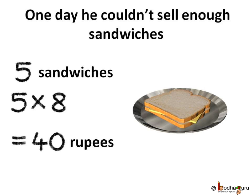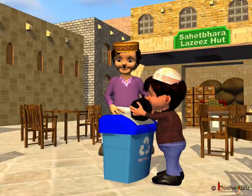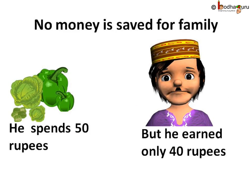Assume someday he couldn't make 50 rupees by selling the sandwiches. He sells only a few sandwiches that day, say 5, and that too at a lower price of 8 rupees each. So he gets 8 into 5, which is 40 rupees. But the sandwiches will be spoiled by the next day. So if he wishes to buy vegetables for 50 rupees the next day, he would need to add some rupees to his previous day's earning of 40 rupees. He would need to add money from his savings and nothing is saved for his family that day.